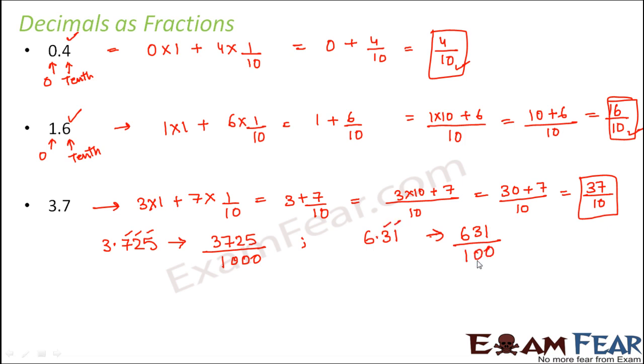So this is how you write decimals as fractions. Put as many zeros in the denominator as many digits you have after the decimal point.